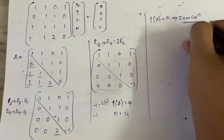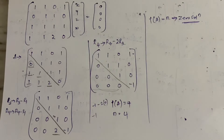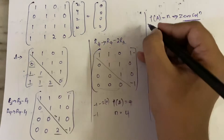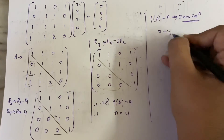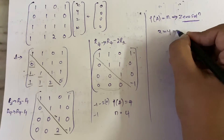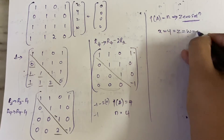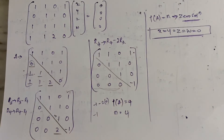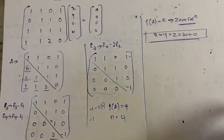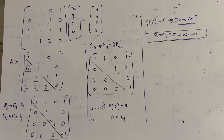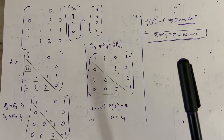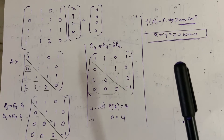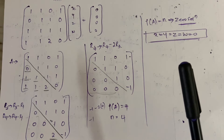When rank of A equals n (number of unknowns), the system has only the zero solution — meaning x = y = z = w = 0. All variable values equal zero. This is the trivial solution. In homogeneous systems, if rank of A equals number of unknowns, you get only the zero solution. In non-homogeneous systems, equality of rank leads to a consistent system with different scenarios.